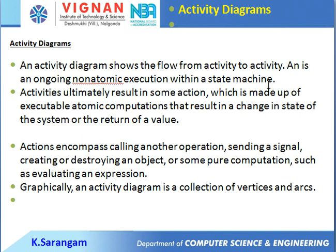An activity diagram shows the flow from activity to activity. It represents ongoing non-atomic execution within a state machine. Activity ultimately results in some action, which is made up of executable atomic computations that result in a change in state of the system or the return of a value.